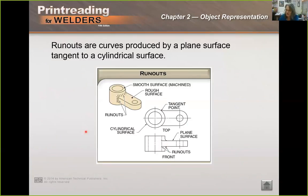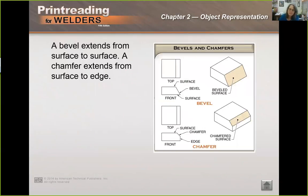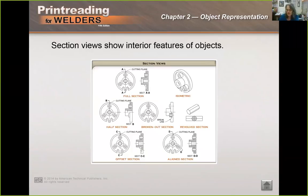Bevels and chamfers are related but different. A bevel goes from surface to surface. It's like a slanted edge. That's a bevel. A chamfer goes from edge to or from surface to edge. It's like a corner. It's been knocked off. This is a chamfer. As I mentioned earlier, section views show us internal views of objects.